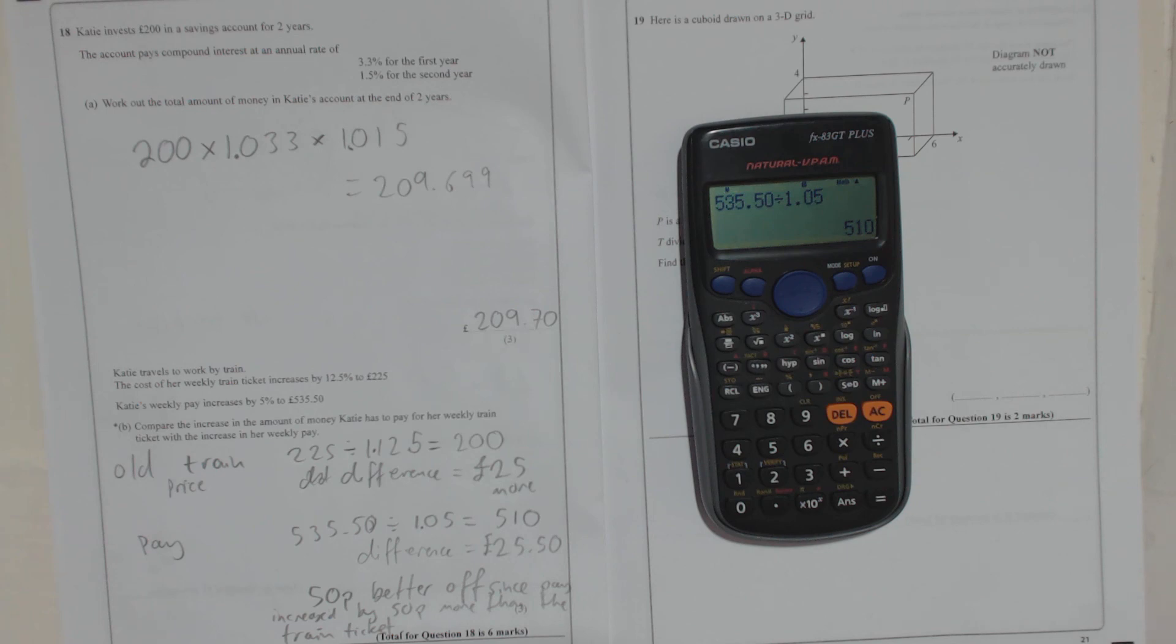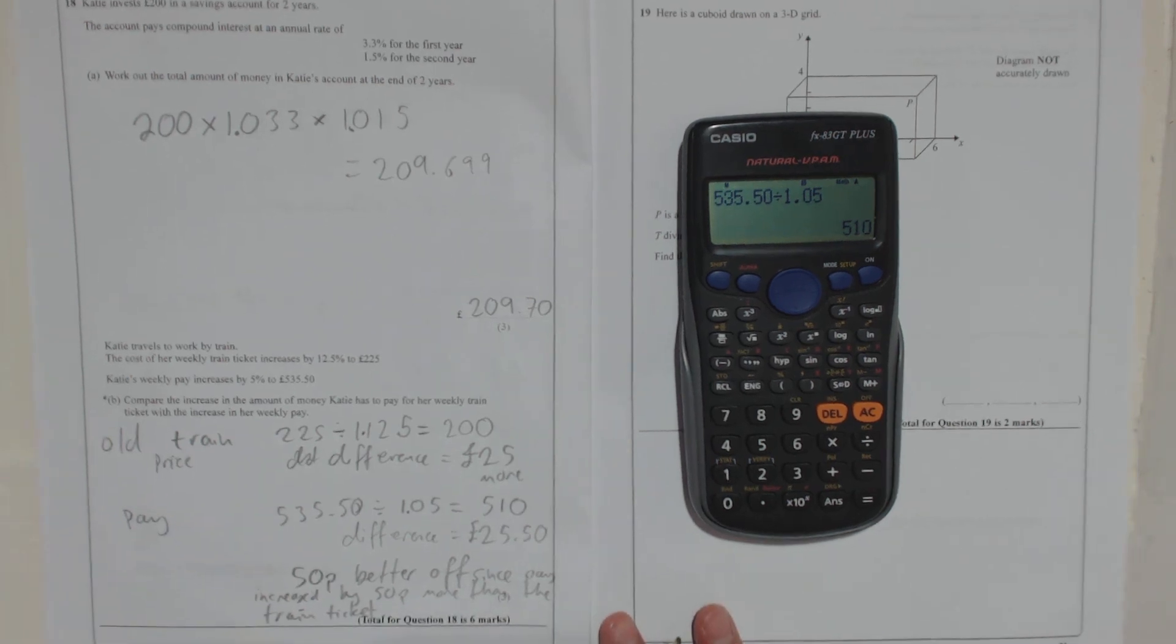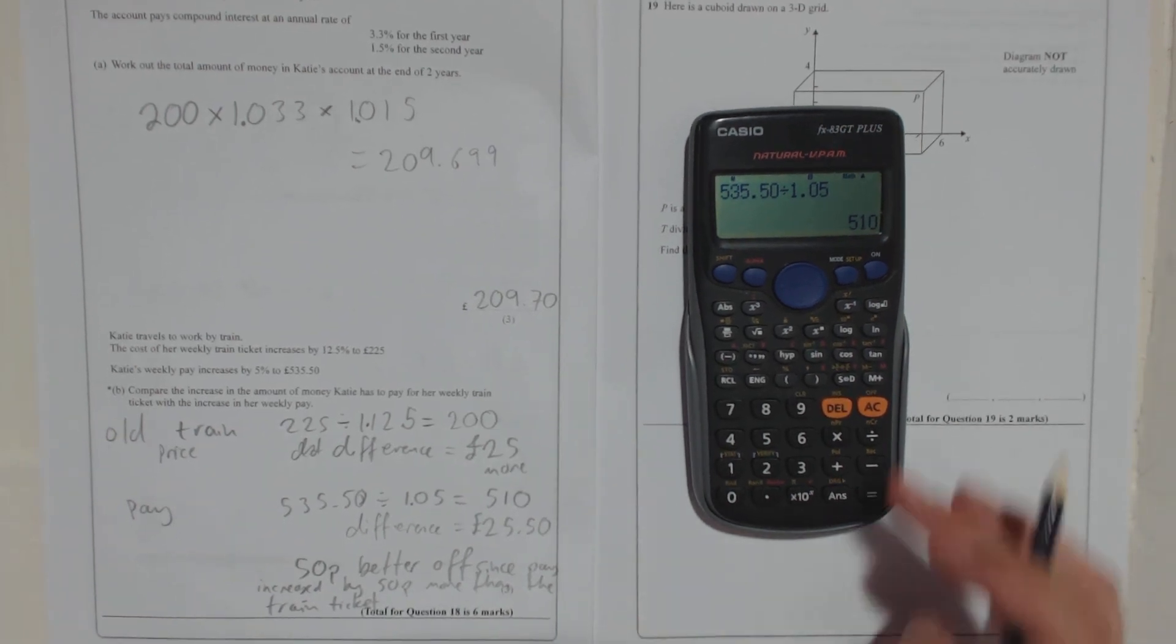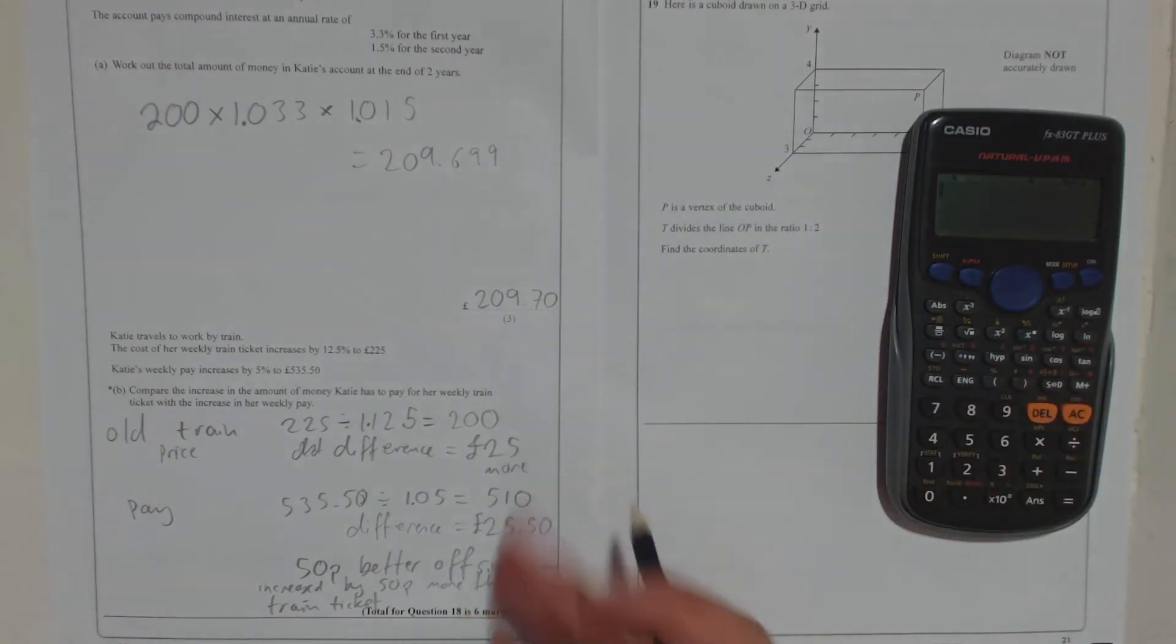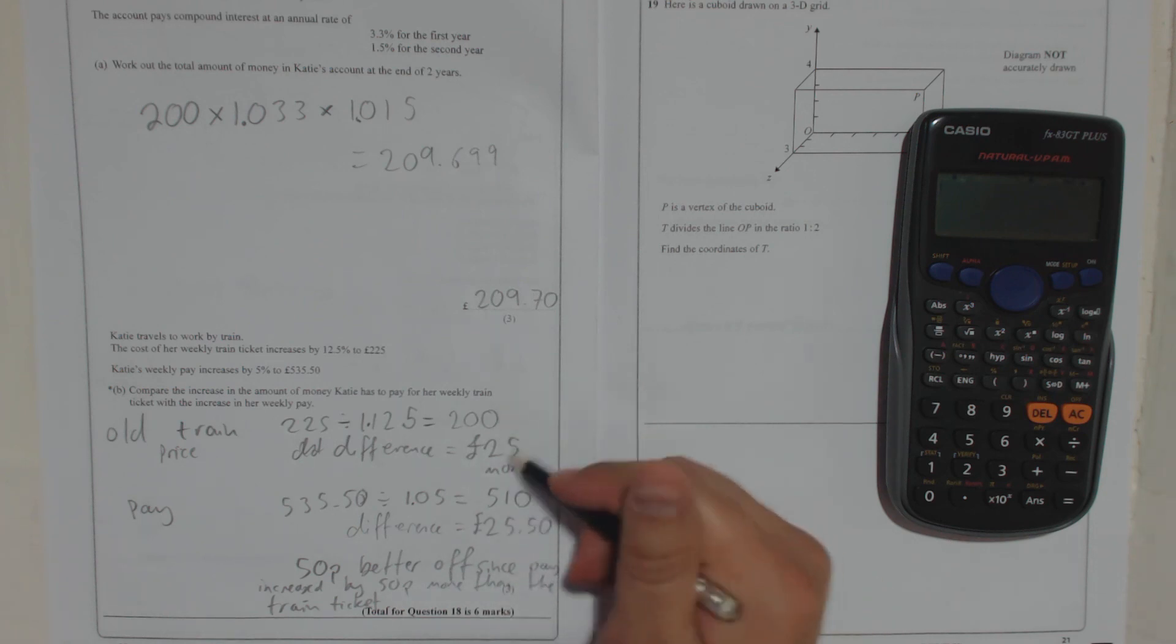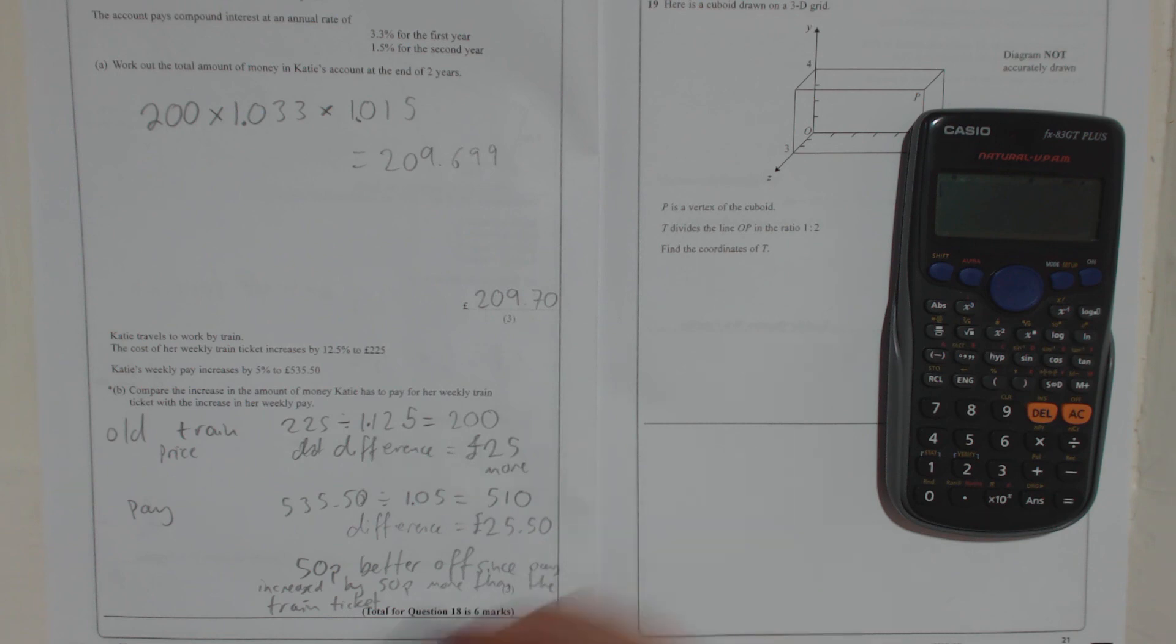Okay. Again, those kind of questions where you need to explain things in your own words. If you're not sure you've explained it fully, and I'm not the best at explaining things, things like that, just keep, put any information in that you feel that you've got. But you've done your calculations. You've worked out the old price and the new price. You've worked out the differences. You've worked out that she gets 50 pence more overall. So 50 pence better off is your answer.